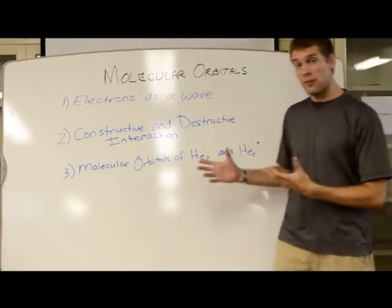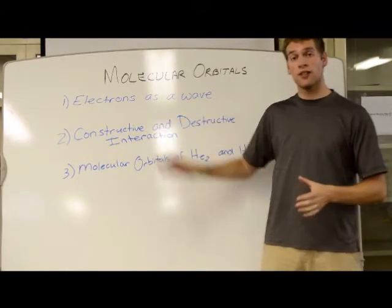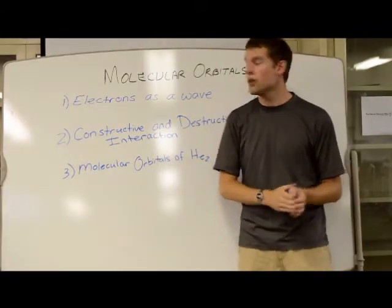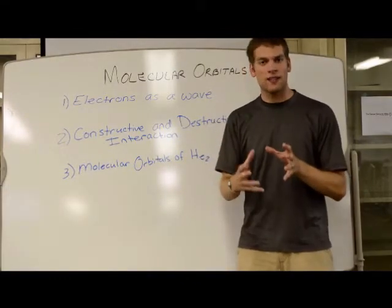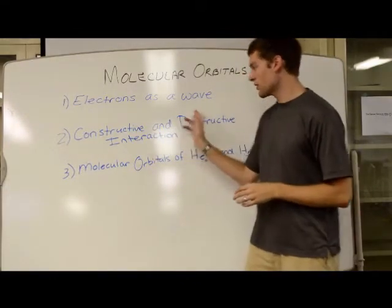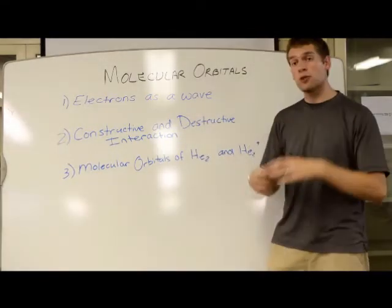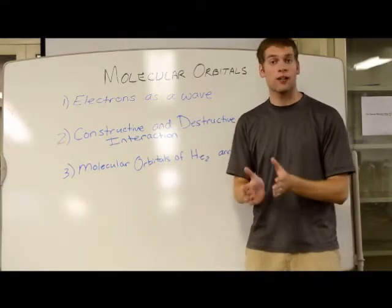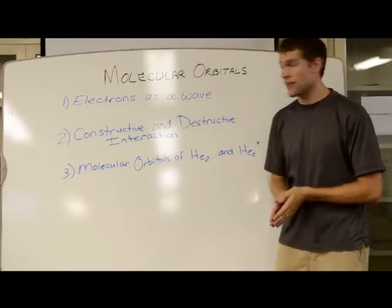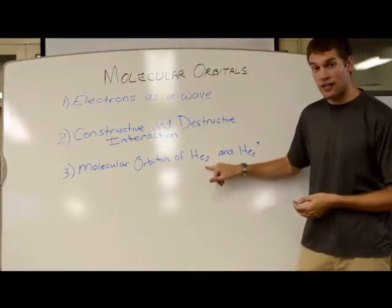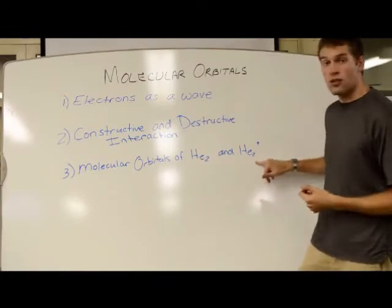We're going to talk about three main things. First, we're going to talk about electrons as a wave in addition to being a particle. Then we're going to discuss how the wave nature of electrons allows them to be added together and subtracted, what we call constructive and destructive interactions, which will then bring us into a discussion about molecular orbitals and why they form and how they form. And then we're going to do a couple case studies of that, illustrating why diatomic helium doesn't exist, but He2+ can.